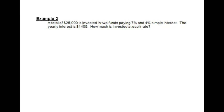Now moving on to example number two, a word problem here. It says a total of $25,000 is invested into two funds paying 7% interest and 4% simple interest. The yearly interest is $1,405. How much is invested at each of these? So what we have to do now is we actually have to make our system of equations and solve it.